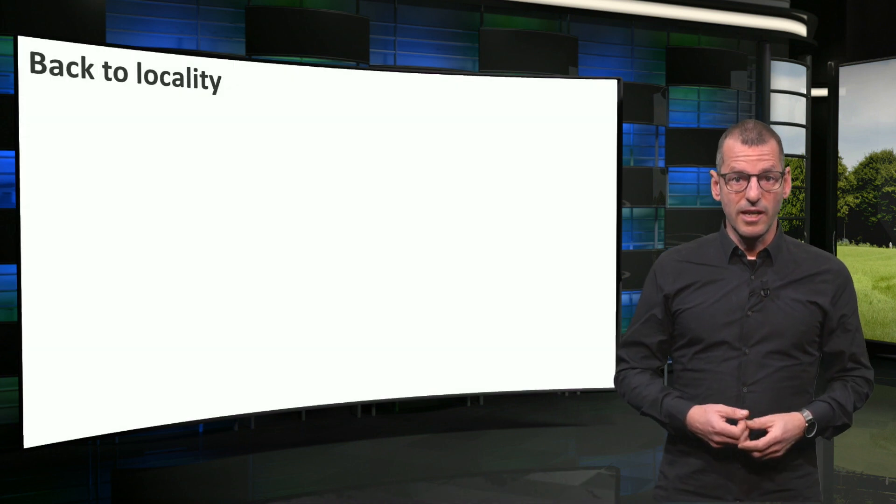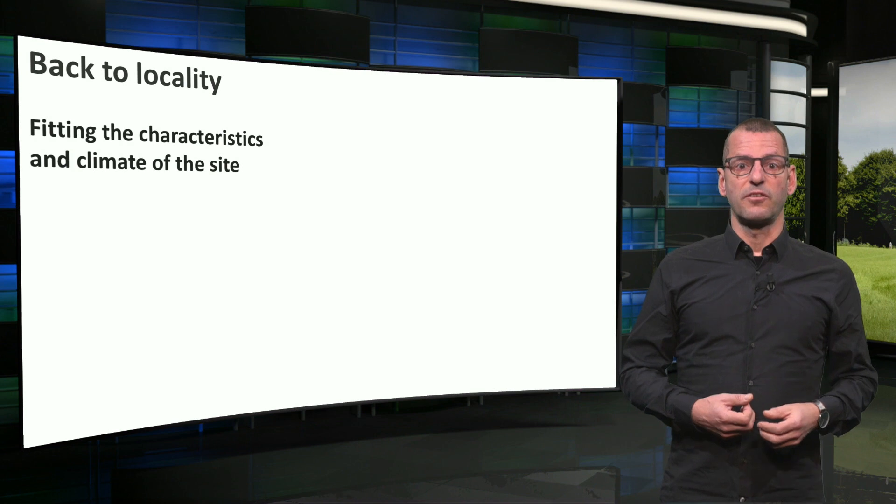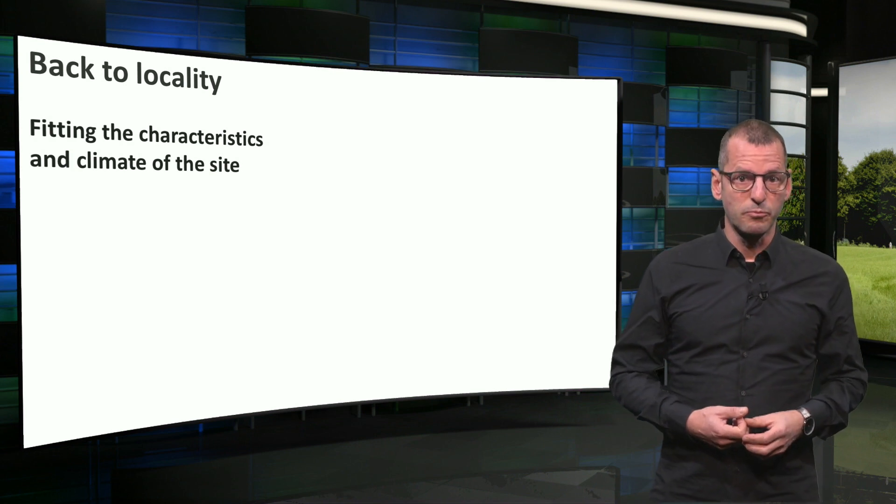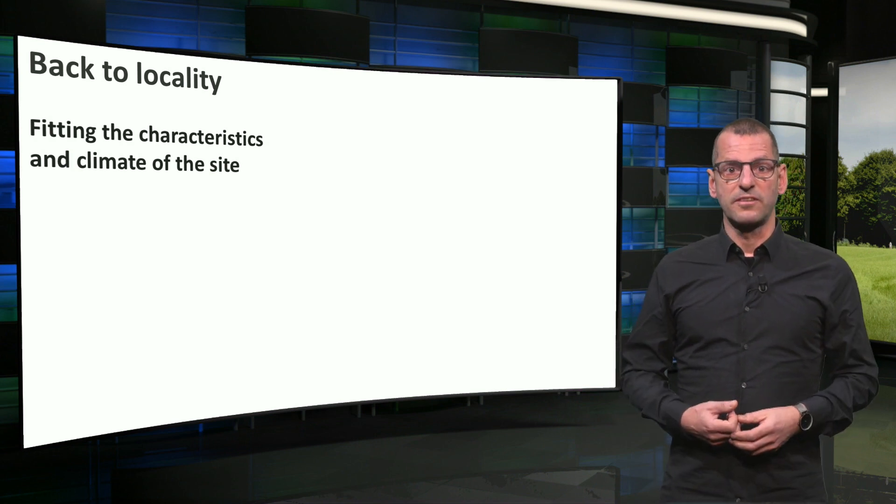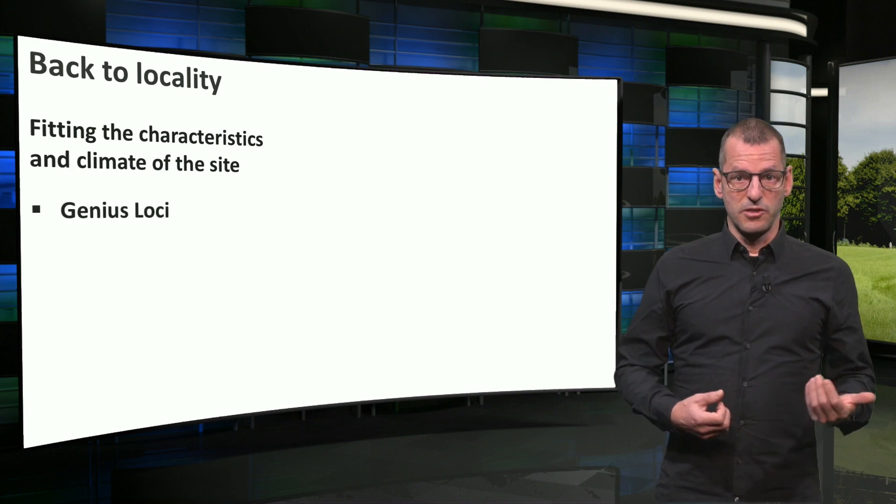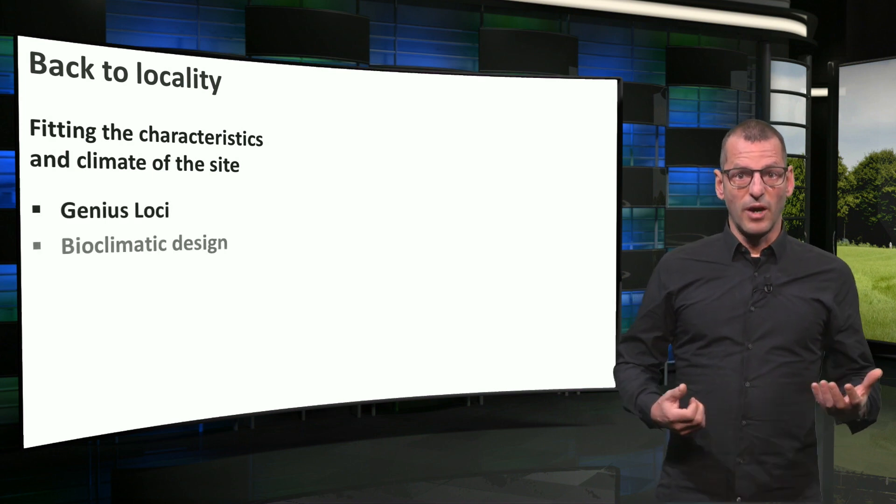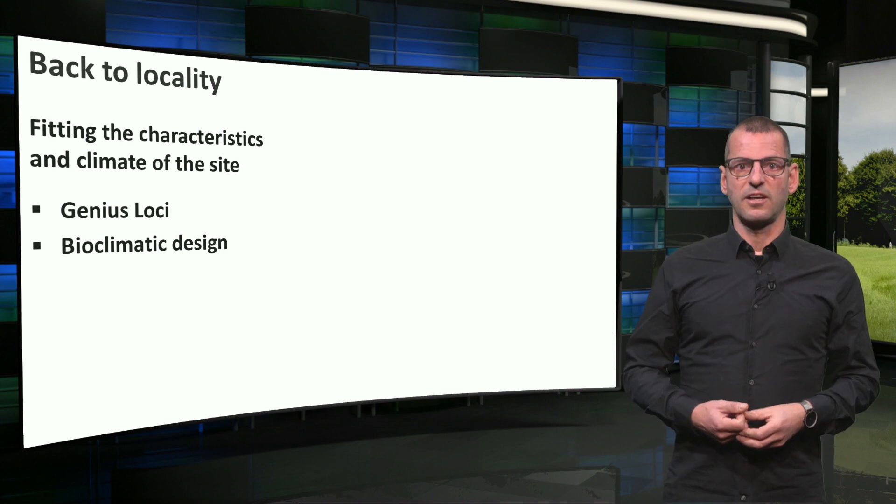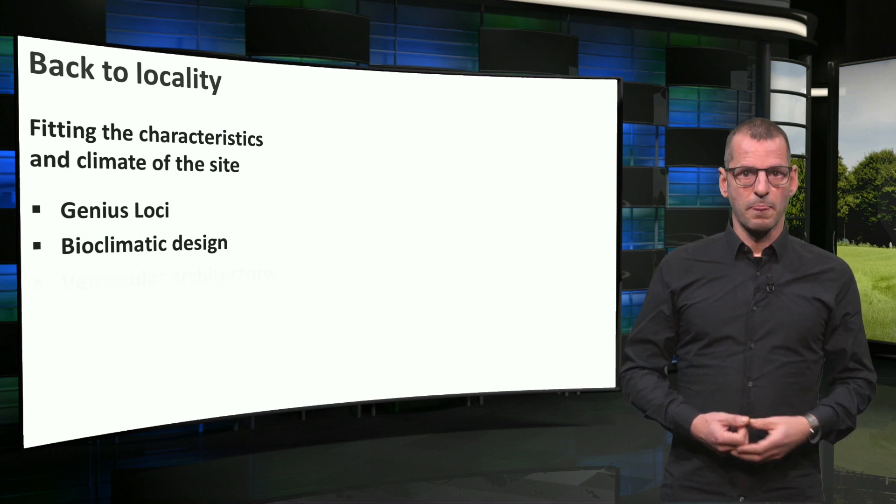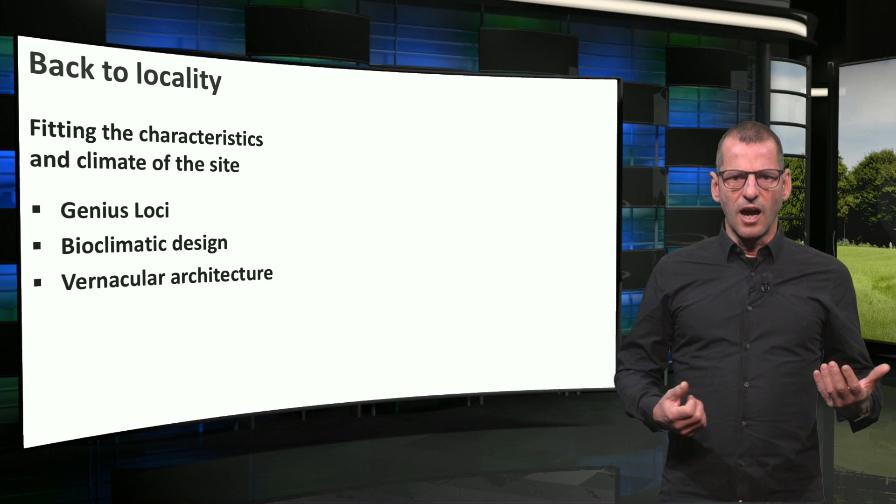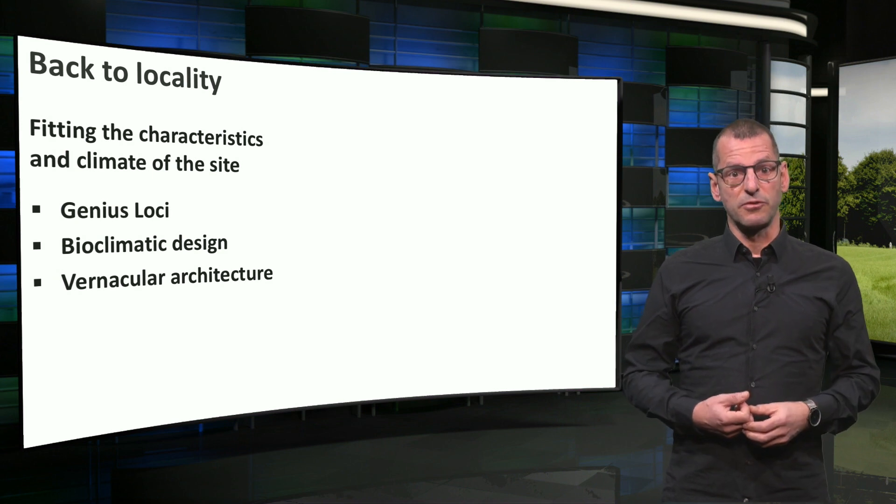In that sense, locality means that a building fits the characteristics and the climate of the site. Other terms that reflect this principle are Genius loci, the spirit of the place, bioclimatic design, buildings that are adapted to the local climate, and vernacular architecture, architecture that has historically evolved due to local availability and lack of resources, when people had to solve things differently.